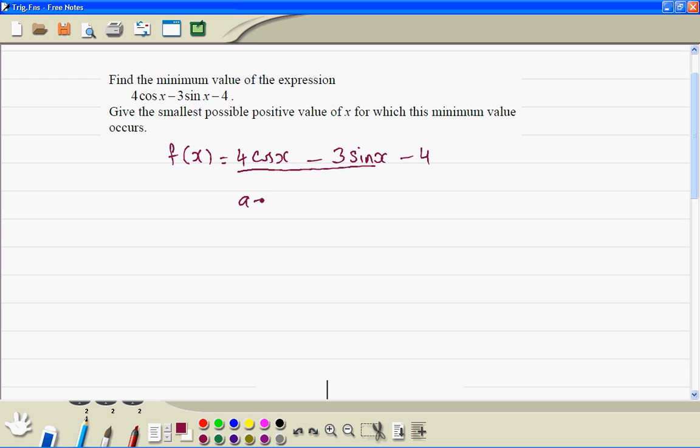So we have a is equal to 4, b is equal to 3, so therefore r, a squared plus b squared, take the square root is equal to 5.